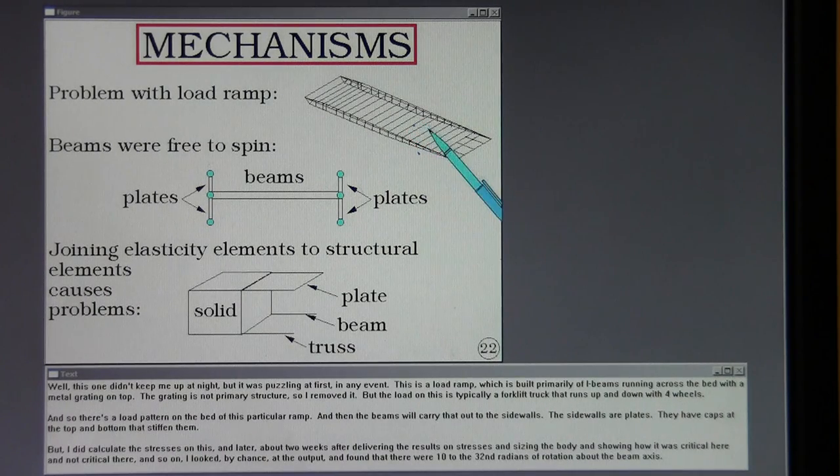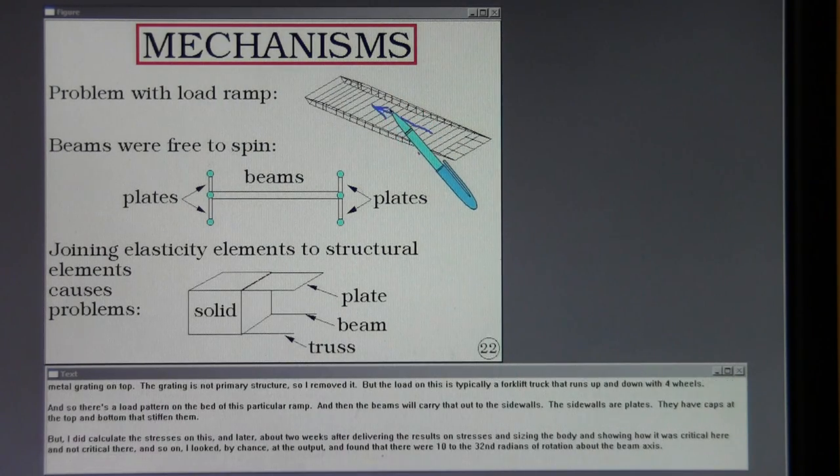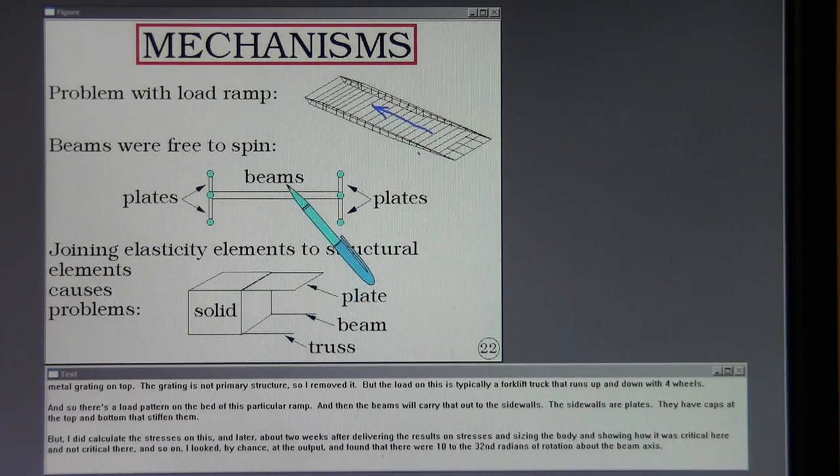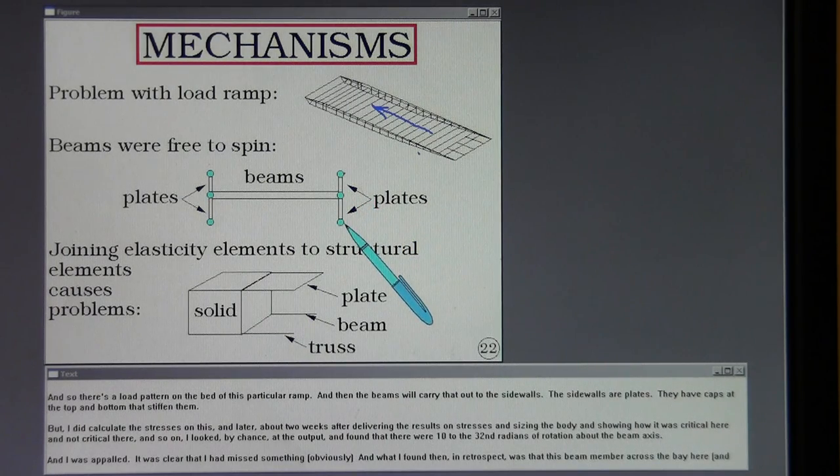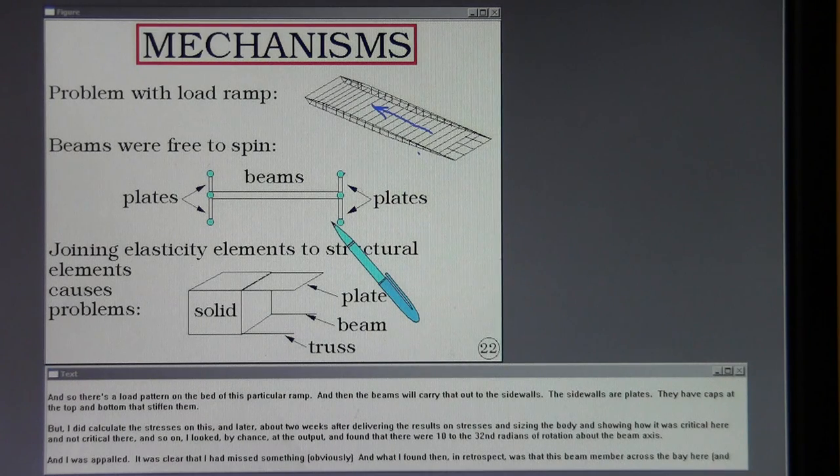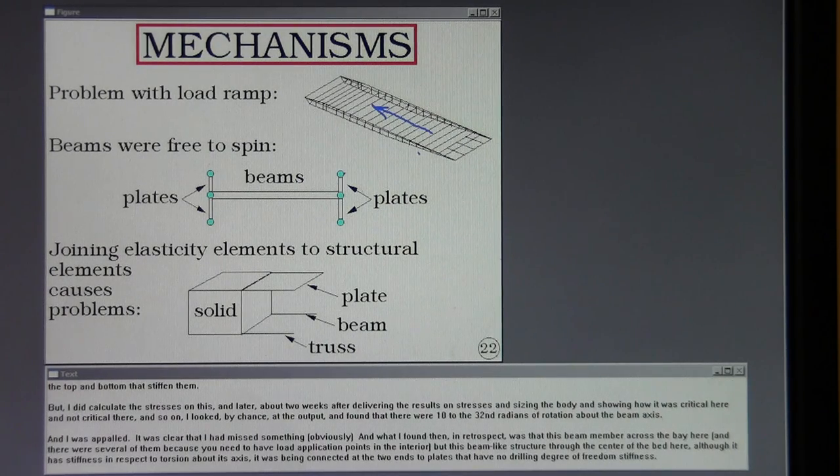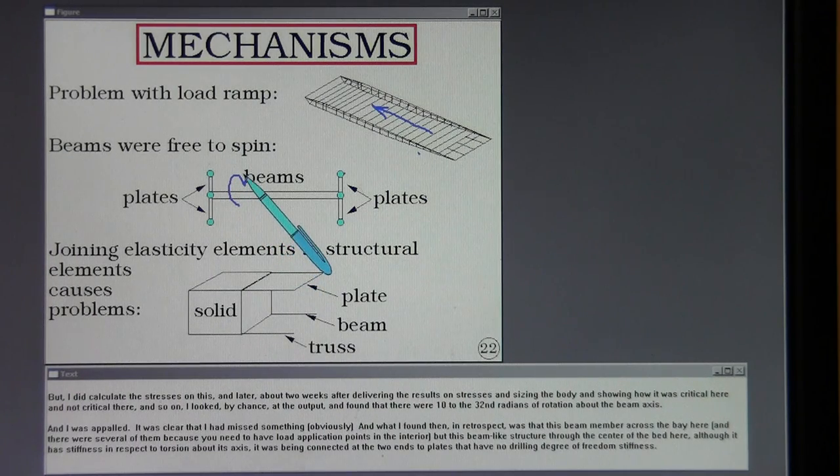Which is built primarily of I-beams running across the bed with a metal grating on top. Now, the grating is not primary structure, so I removed it. But the load on this is typically a forklift truck that runs up and down with four wheels. And so there's a load pattern on the bed of this particular ramp. And then the beams will carry that out to the sidewalls. The sidewalls are plates. They have caps at the top and bottom that stiffen them. But I did calculate the stresses on this. And later, about two weeks after delivering the results on stresses and sizing the body and showing how it was critical here and not critical there and so on, I looked by chance at the output and found that there were 10 to the 32nd radians of rotation about the beam axis.